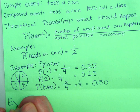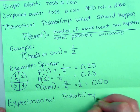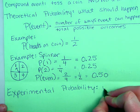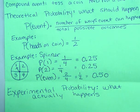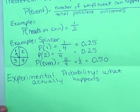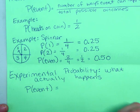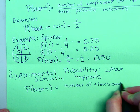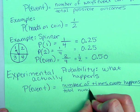The next example is experimental. Or the other type of probability. So we have theoretical probability. What should happen, experimental, is what actually happens. Okay, so usually you'll do some kind of chart to tally how many times that event has occurred.